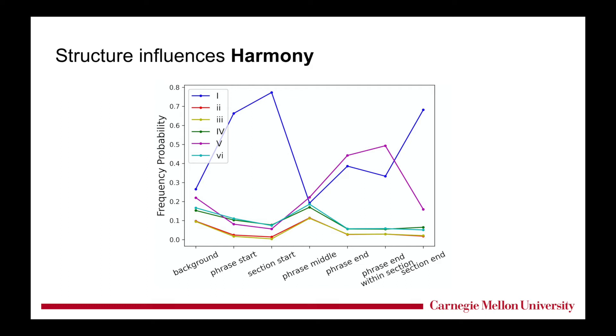Now let's assume, if structure has nothing to do with harmony distribution, then all of the lines will be flat. No difference, right? And if there is only one level of structure, say we only had the big section structure, then the smaller phrase start, phrase middle, and end locations would be all the same, similar to the background.